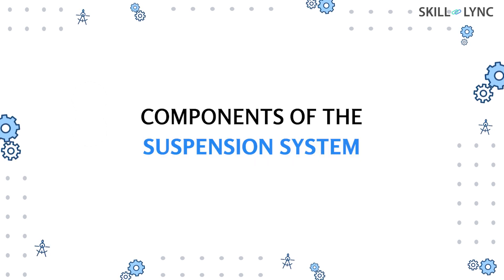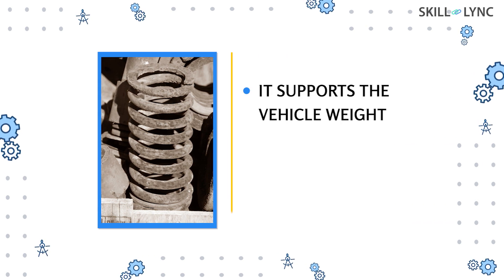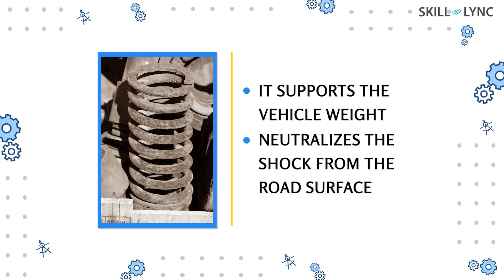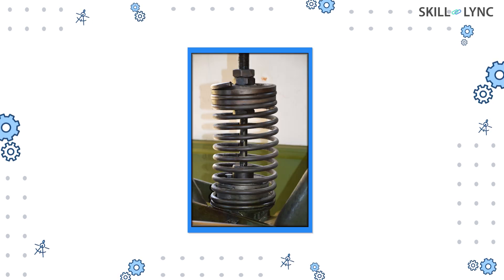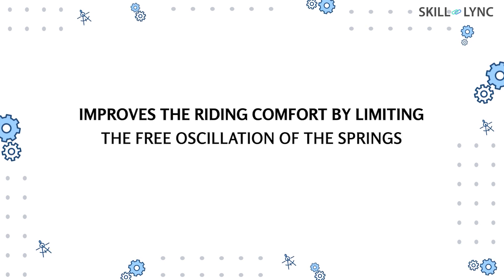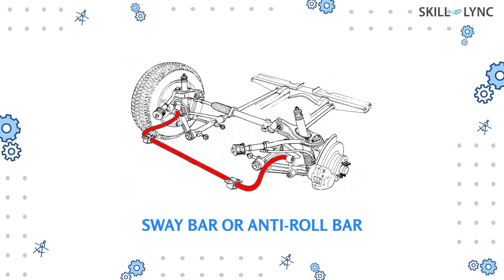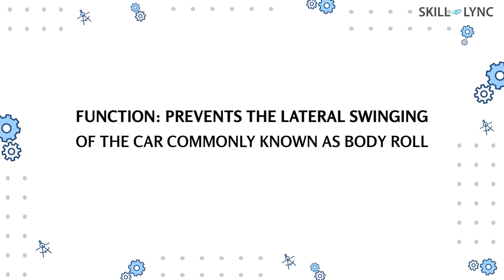Now let's talk about the components of the suspension system. The first component is the spring — it acts as a neutralizer, supporting the weight of the vehicle and neutralizing shock from the road surface. The second component is the dampers, also called shock absorbers, which improve riding comfort by limiting the free oscillation of the springs. The third is the stabilizer, also called the sway bar or anti-roll bar, whose function is to prevent the lateral swinging of the car, commonly known as body roll.